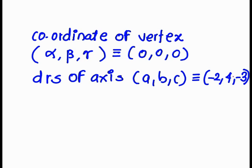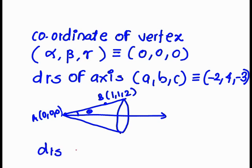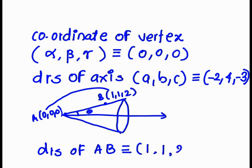Now we need to find the semi-vertical angle. We can draw a rough diagram to get a clear idea. They give us one point on the cone — let point B be (1, 1, 2). We know the vertex A is at (0, 0, 0). To find the angle between the axis and line AB, we require the DRs of both lines. The DRs of AB are simply the coordinate differences: 1 minus 0, 1 minus 0, 2 minus 0, giving DRs of AB as (1, 1, 2).